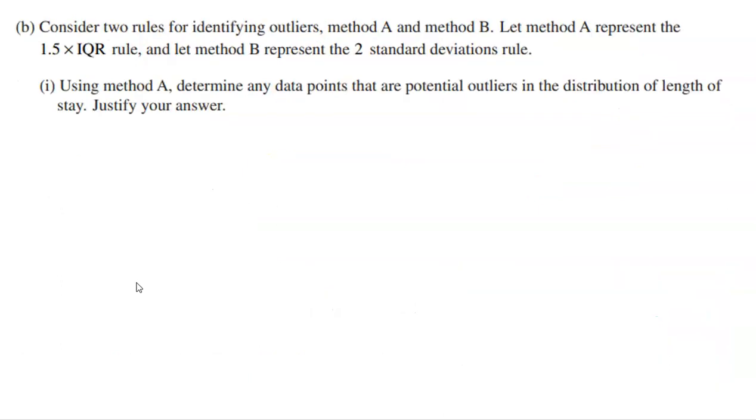Part B says, consider two rules for identifying outliers, method A and method B. Method A represents the 1.5 times IQR rule. Method B represents the two standard deviation rule. The first part is to use method A to determine if there's any potential outliers. If you're not familiar, this is called the fence method. We're thinking above the upper fence in your data is considered an outlier.